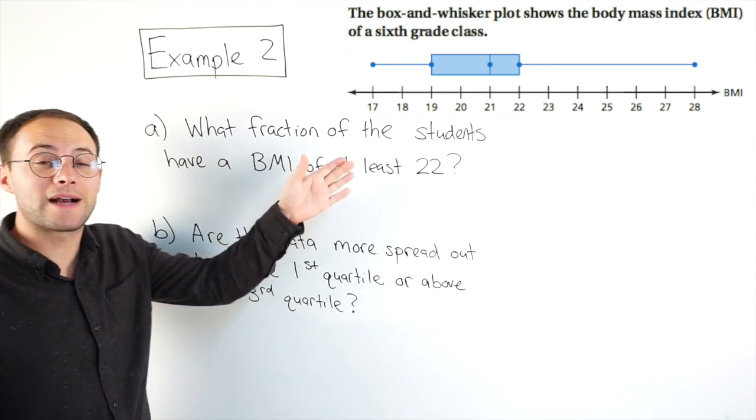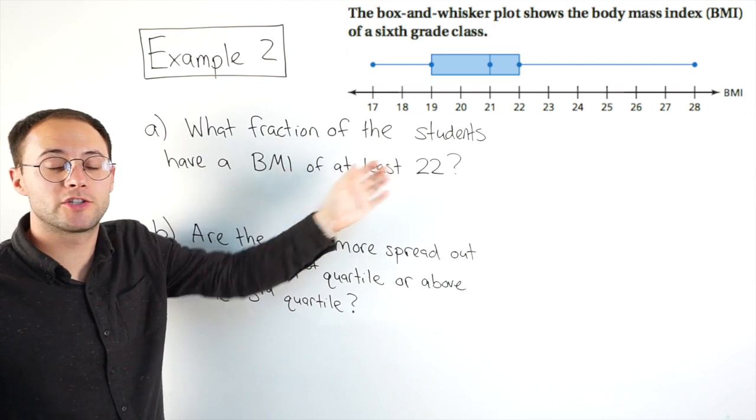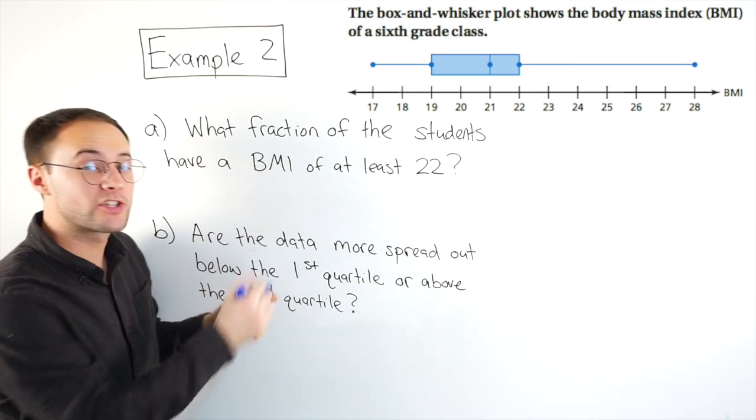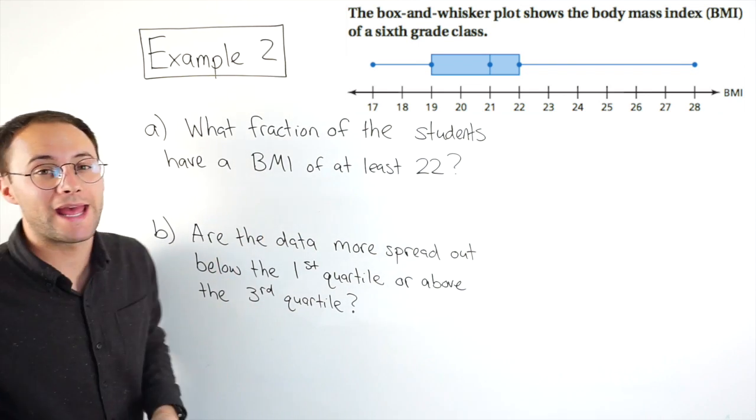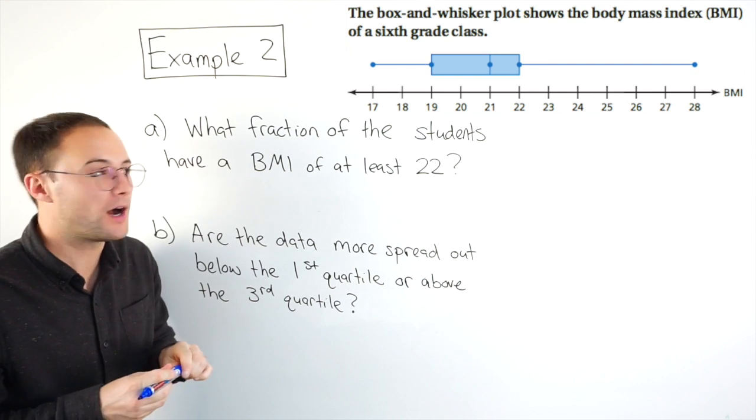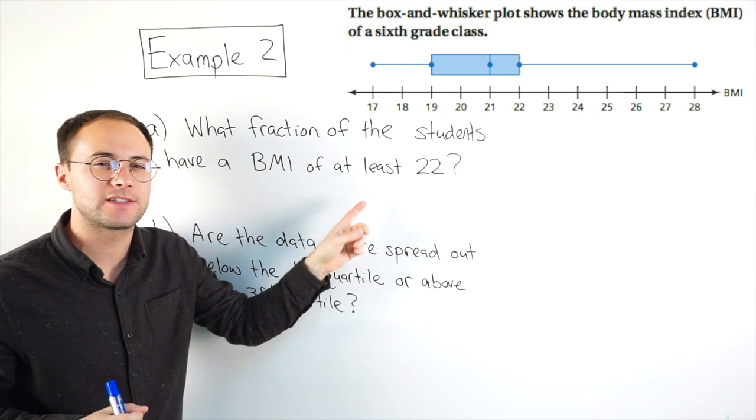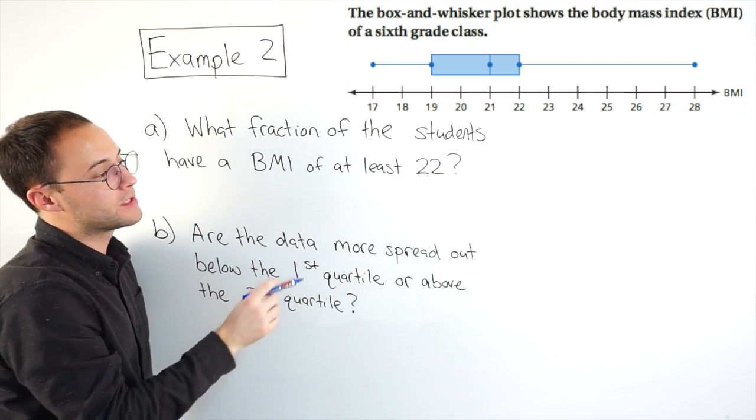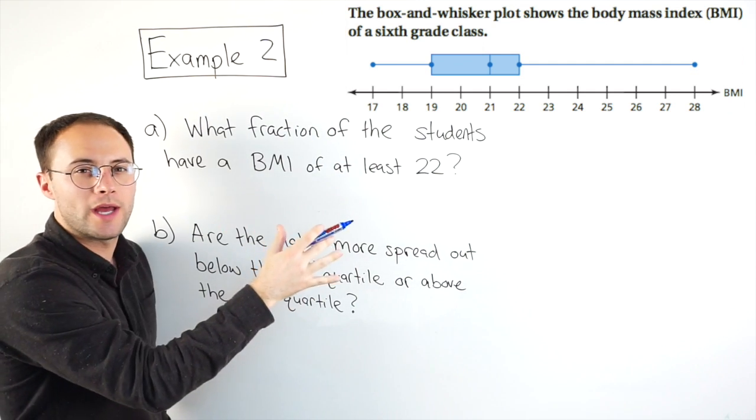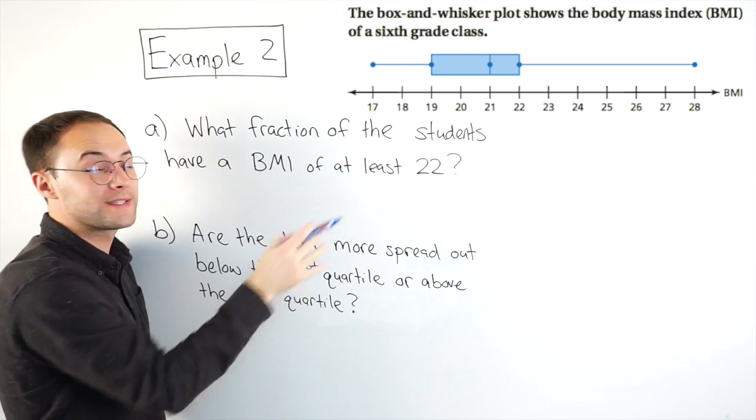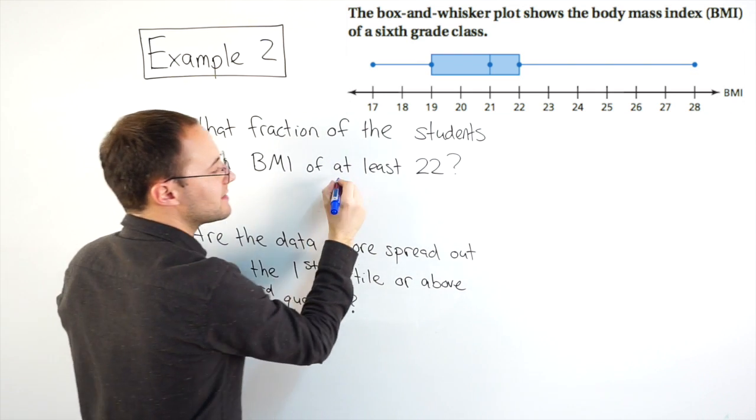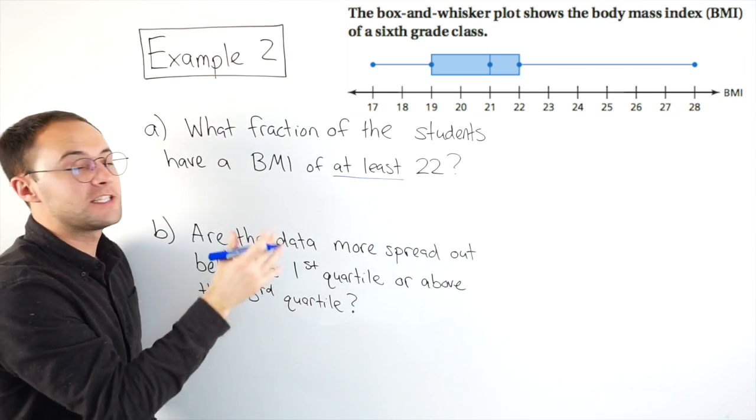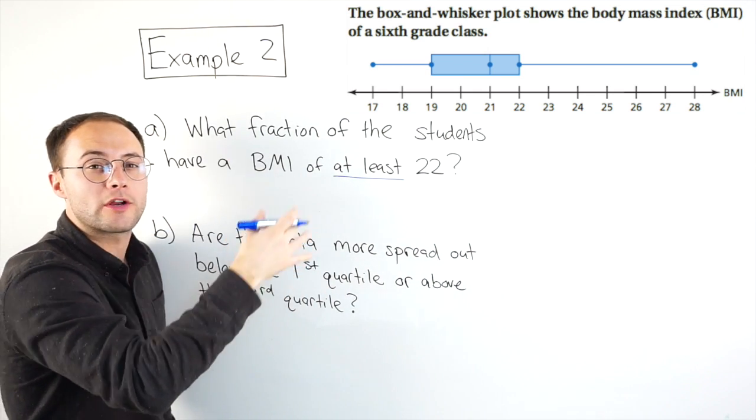Alright, example two. The box and whisker plot over on the right here shows the body mass index or BMI of a sixth grade class. So part A is asking what fraction of the students have a BMI of at least 22. So if we look over at the box and whisker plot, you'll see 22 is right at that third quartile. And at least, that's the key word there, at least, or key phrase, at least means 22 or greater.